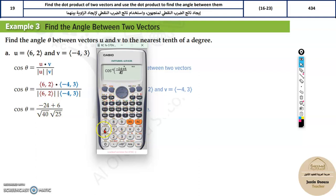That is negative 24 plus 6 divided by square root 40 plus square root 25. Just close the brackets.